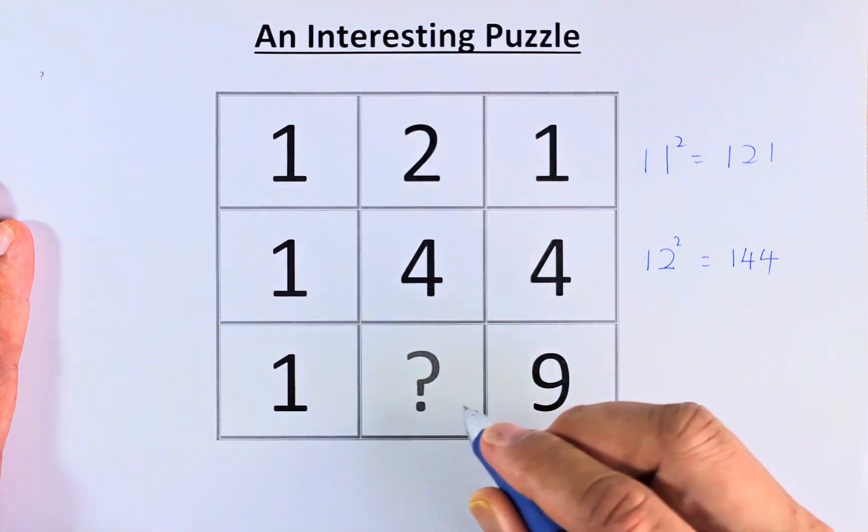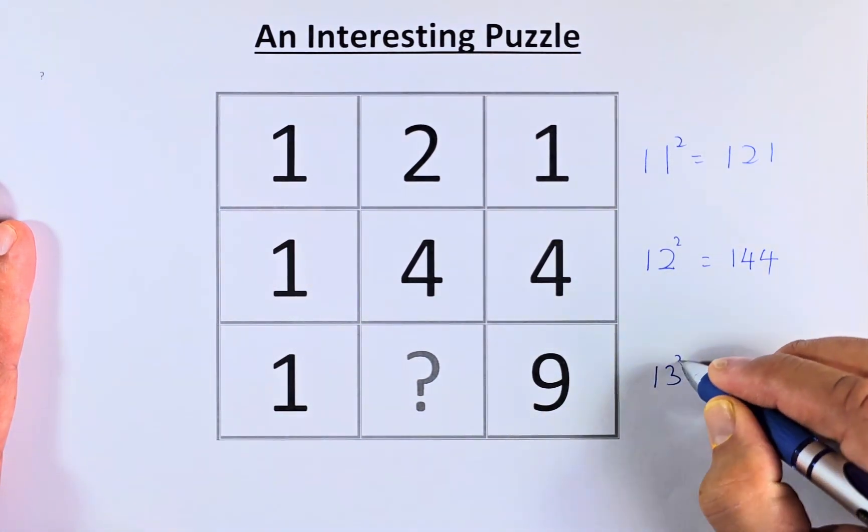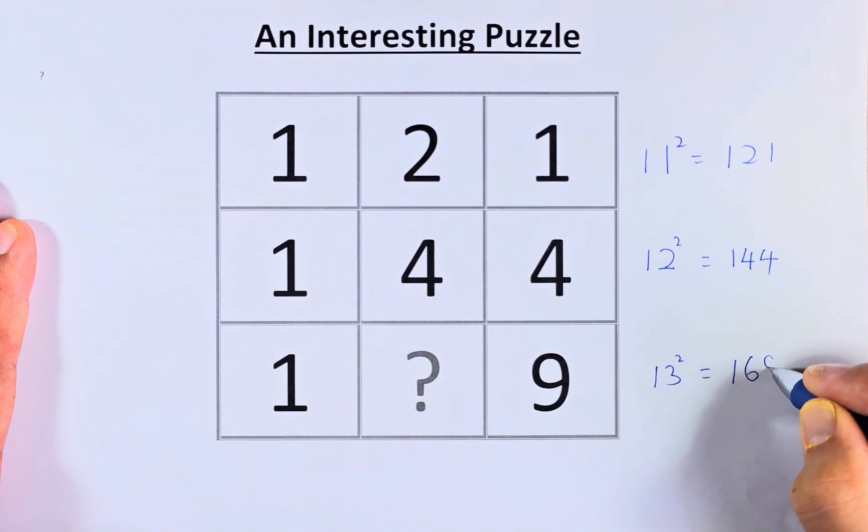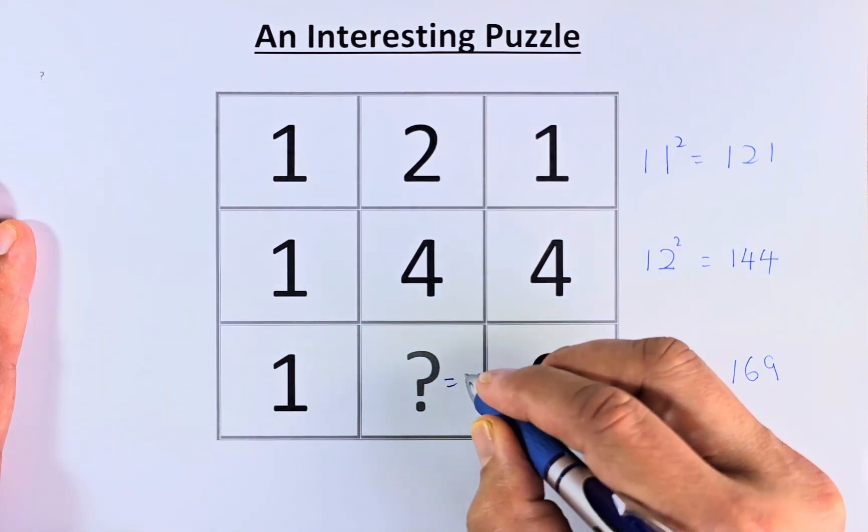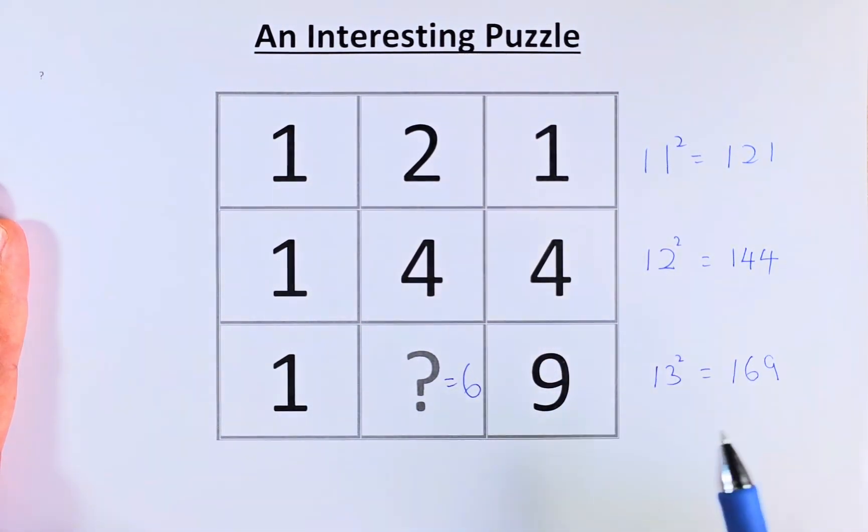So to get what the question mark is going to be 13 squared. 13 squared is 1, 6, 9. So your question mark has to be a 6. So because the answer is 1, 6, 9.